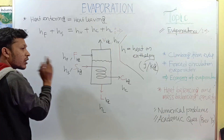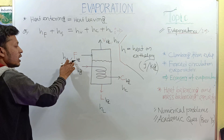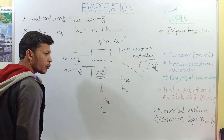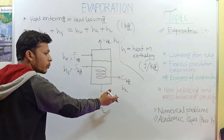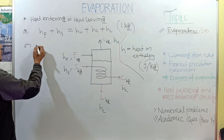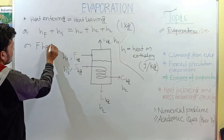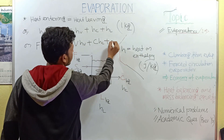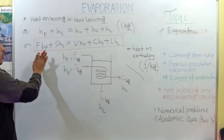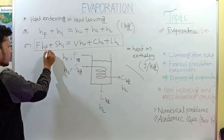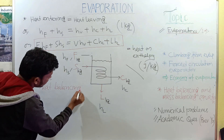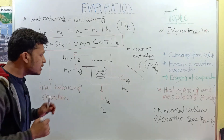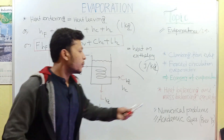These parameters hf, hs, hv, hc, and hl are all per kg values. Since we introduced F kg of feed, S kg of steam, and we gain V kg of vapor, C kg of condensate, and L kg of product, the total heat balancing equation becomes: F·hf + S·hs = V·hv + C·hc + L·hl. This is the heat balancing equation.